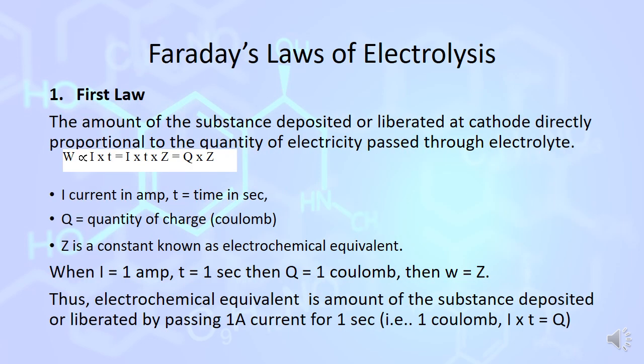Faraday's law of electrolysis, First law: The amount of the substance deposited or liberated at the cathode is directly proportional to the quantity of electricity passed through electrolyte. W is directly proportional to Q, where W is the amount of substance, Q is the charge. We can say W is directly proportional to the product of I and T, where I is the current passed and T is the time.